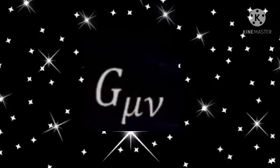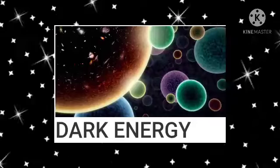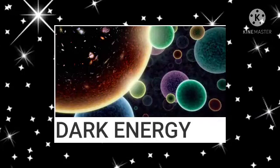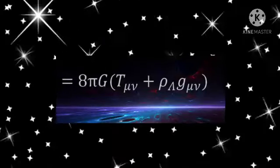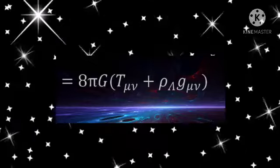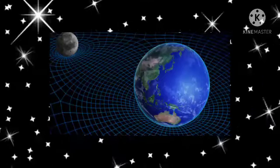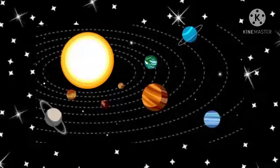The right-hand side of this equation describes the energy contents of our universe, including the dark energy that propels the current cosmic acceleration, Livio explained. The left-hand side describes the geometry of space-time. The equality reflects the fact that in Einstein's general relativity, mass and energy determine the geometry.